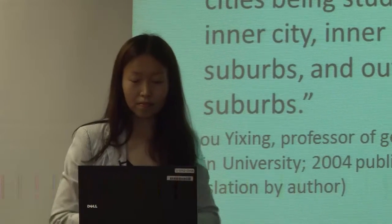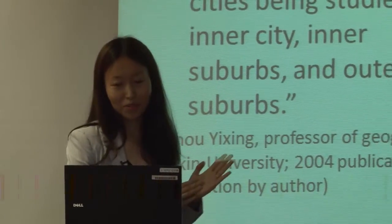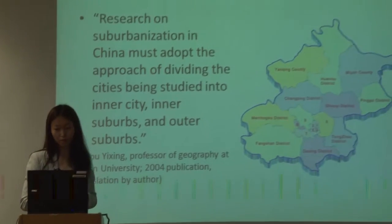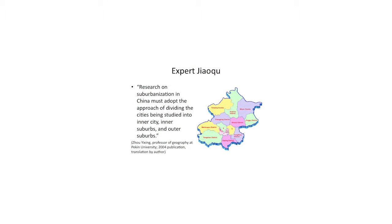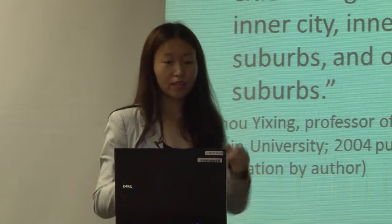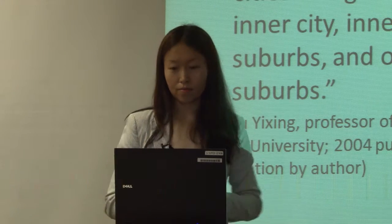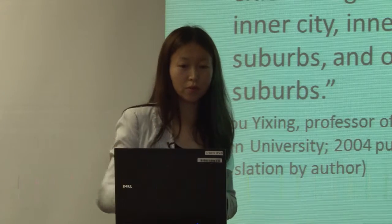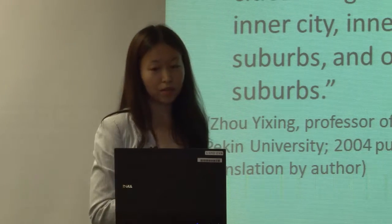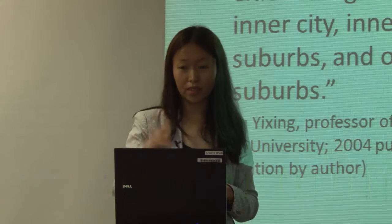I also read many academic publications studying suburbanization or suburban sprawl in the Chinese context. This is a quote from a very senior geographer based at Peking University, and this is how he understands what is a suburb — it's my translation. He wrote: research on suburbanization in China must adopt the approach of dividing cities being studied into the inner city, inner suburbs, and outer suburbs. This is a very widely shared view among Chinese urban geographers — that cities must be divided into these three zones so scholars can track population change over time.